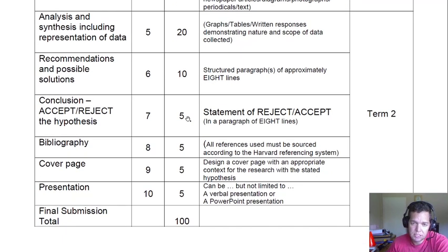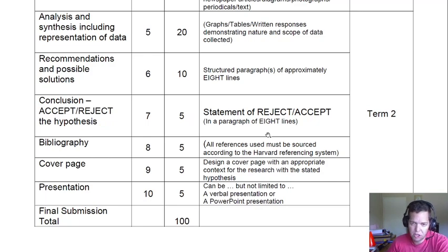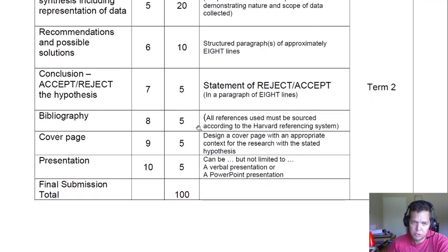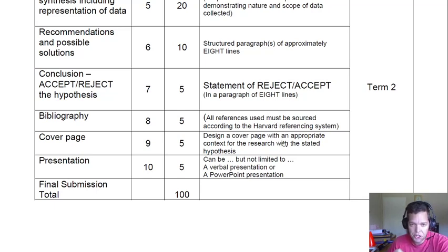Step 7 is when you would state either 'I accept my hypothesis' or 'I reject my hypothesis for these reasons,' in a paragraph of 8 lines. Then you need to put together a bibliography, which shows all of your resources — all the books, the internet sites, the people that you interviewed. Even pictures that you've got, if you use them from another source, you must credit that source in the bibliography.